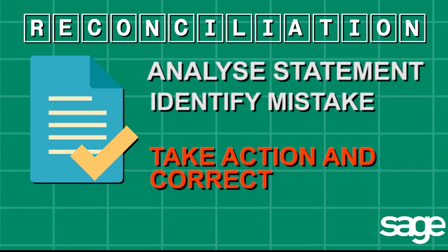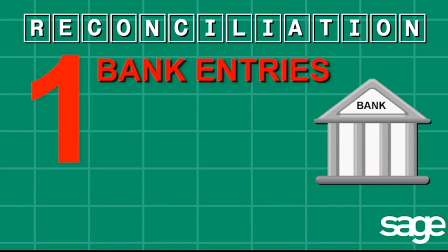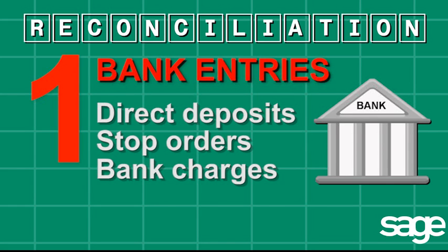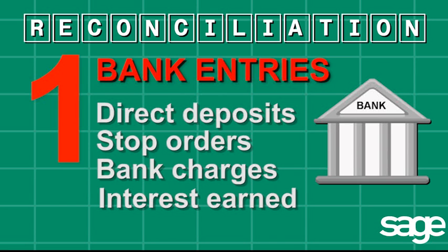There are three main reasons that would explain a difference between the cash book and the bank statement. The first reason could be that the bank has already reflected certain entries on the bank statement that we know nothing about — for example, direct deposits made, stop orders paid, bank charges imposed, interest earned or paid. These are entries that are automatically put onto the bank statement, so we only get notified of them once we receive the bank statement.